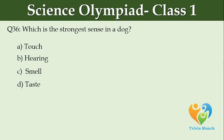Which is the strongest sense in a dog? Option A: Touch. Option B: Hearing. Option C: Smell. Option D: Taste.